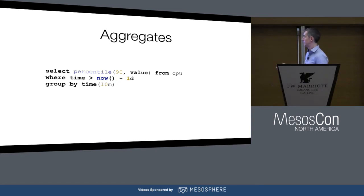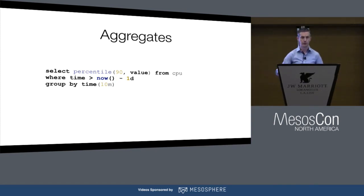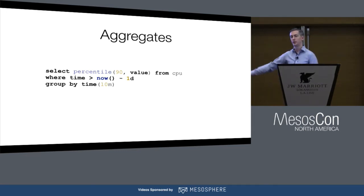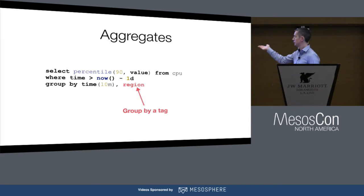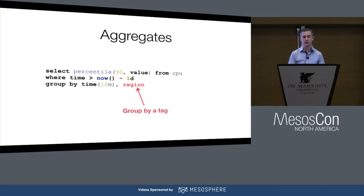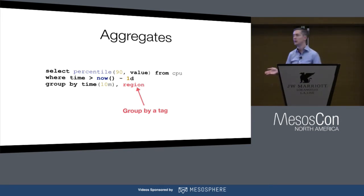Here, what we're doing is saying give me the 90th percentile of value from the CPU measurement for the last day in 10-minute windows of time. Another thing we could do is add a GROUP BY region or a GROUP BY host. If we did a GROUP BY host, we would get a separate time series for each individual host — at 10-minute intervals over one day, that's 144 data points per host.